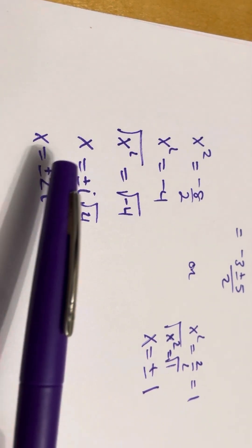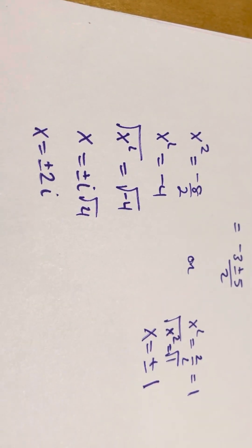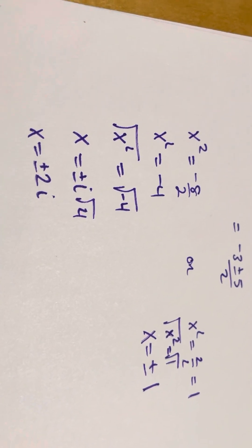So, our four answers are positive 2i, negative 2i, positive 1, and negative 1. Okay. Hope that helps.